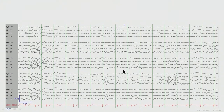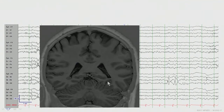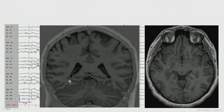This is a posterior temporal discharge seen in a patient with periventricular heterotopia in the right hemisphere, seen in this coronal T1-weighted image. This is actually the heterotopia — you can appreciate it in the axial image as well.